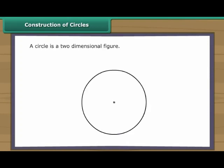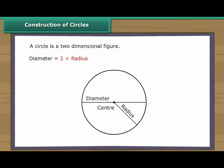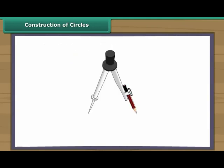Every circle has a centre. The distance between the centre and the boundary of a circle is known as its radius. The line segment through the centre of a circle with its end points touching the boundary of the circle is known as the diameter of the circle. The diameter of a circle is twice its radius. We draw circles with the help of a compass.